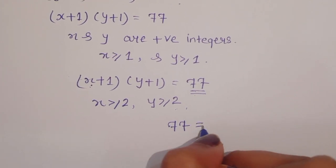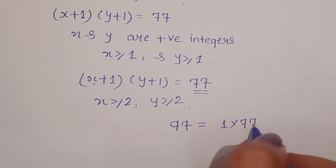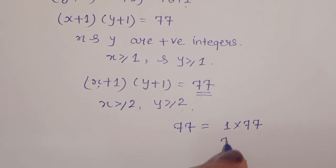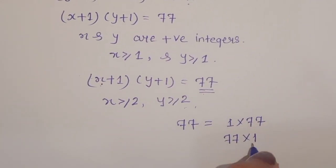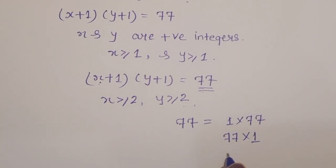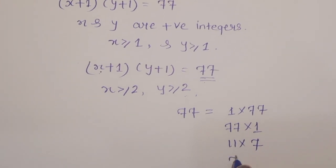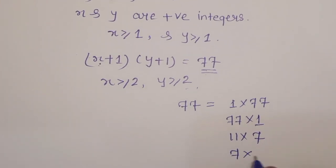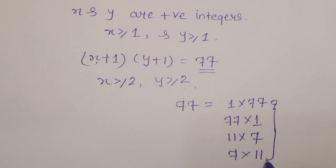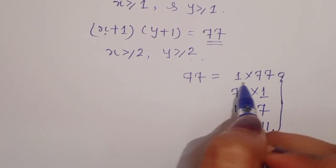77 can be written as: 1 times 77, 77 times 1, 11 times 7, and 7 times 11. These are all four factor pairs of 77.